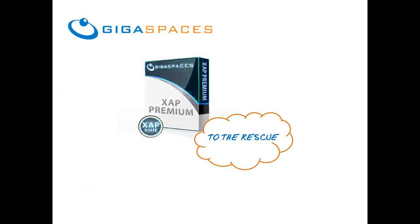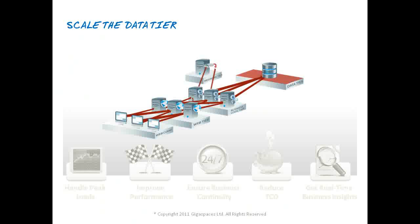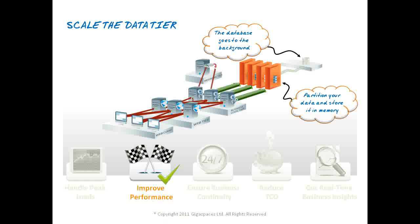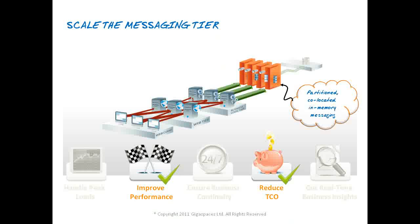Enter GigaSpaces ZAP. We start by scaling the data tier, partitioning the data in memory, and achieving share-nothing architecture. Next, we co-locate the messaging with the data, eliminating network hops and achieving scalable messaging, while reducing the number of moving parts, enabling us to do away with the messaging tier altogether.